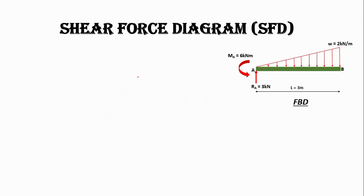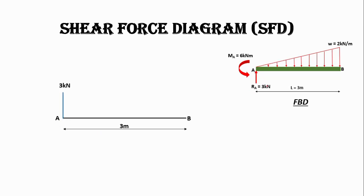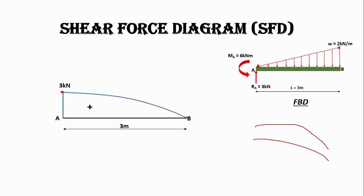Let's draw the shear force diagram. At A, the Ra reaction is 3 kilonewton in the upward direction, so we draw a line of 3 kilonewton upward. Since we have a triangular load, we use a parabolic curve for the shear force diagram. The slope is minimum at one end and maximum at the other. We join point A to point B with this parabolic curve. The total shear force diagram has a maximum shear force of 3 kilonewton acting on the beam.